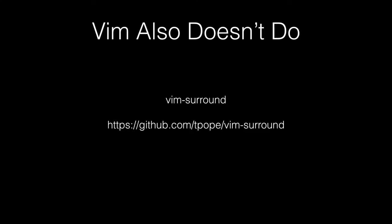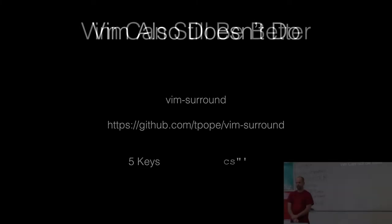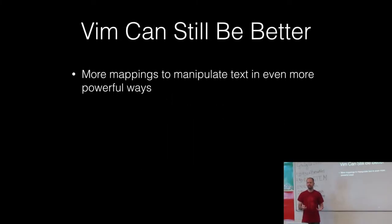There's another plug-in called Vim Surround which will allow you to change the surrounding quotes. If you need to add surrounding quotes, or add surrounding parentheses, or any other enclosing elements, that would actually take that particular operation down to five keys, and your cursor can be anywhere inside that string. So this is just a couple of plug-ins that sort of make things better. Even though core Vim is very powerful, you can find plug-ins that add lots of mappings to make things even better - more text manipulations, more ways to jump around the file.